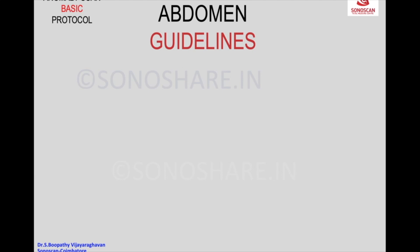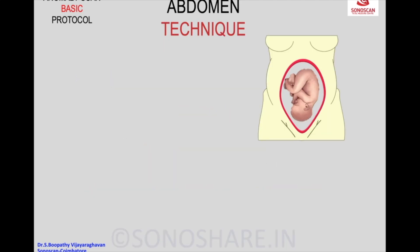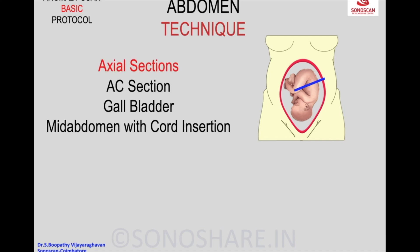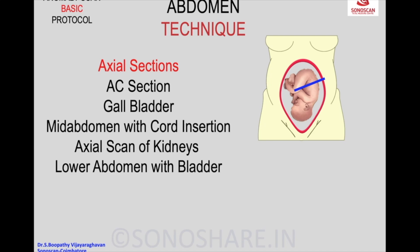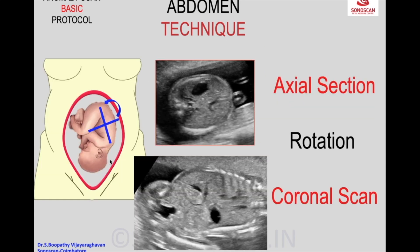Now the guidelines cover most of the abdomen. These are the parameters: the cord insertion, and axial scan of the kidneys. These are the axial sections to be taken, and these are made as a complete continuous sweep — not individual sections — and then the lower abdomen 90 degrees to that, then you get the coronal section.